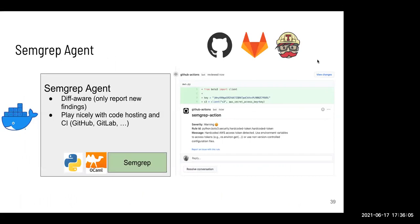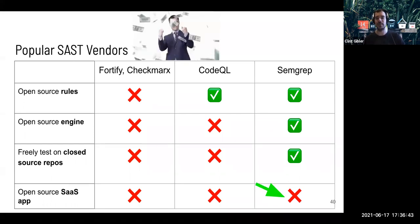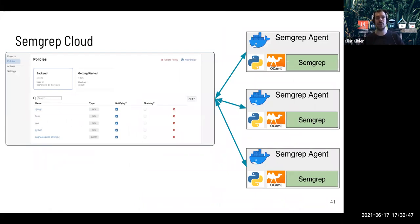How does SEMGREP compare to other tools? SEMGREP's rules are open source, as are CodeQL's, which I think is great. But also the engine is open source — that's a differentiator. You can run it freely on closed-source repos as much as you want and never have to talk to us. We do have a SaaS app that is not open source — hopefully that's how we make money. We have a dashboard: a free community edition where you can sign up, use most functionality, never pay us, never talk to us. The idea is you have a bunch of repos, SEMGREP scanning in CI on all of them, and it collects and displays results.